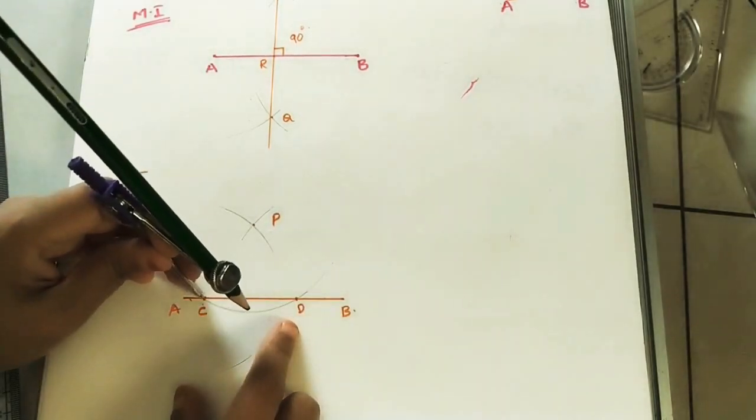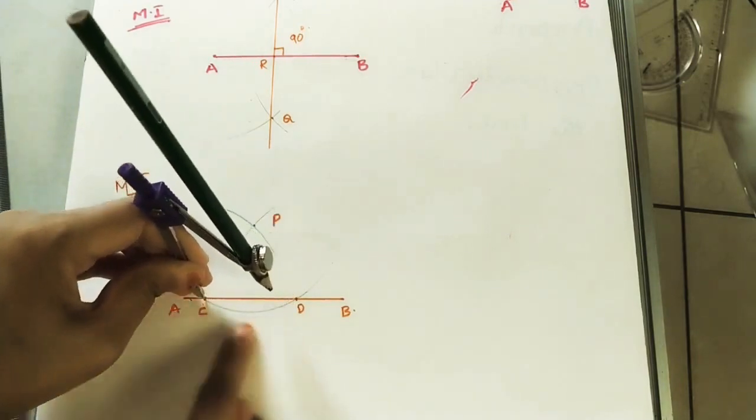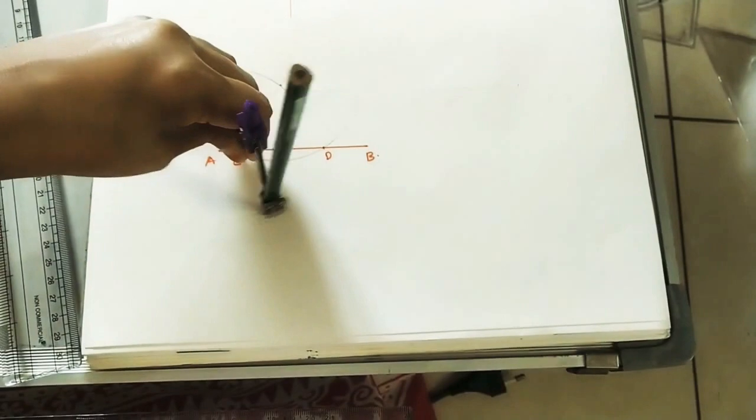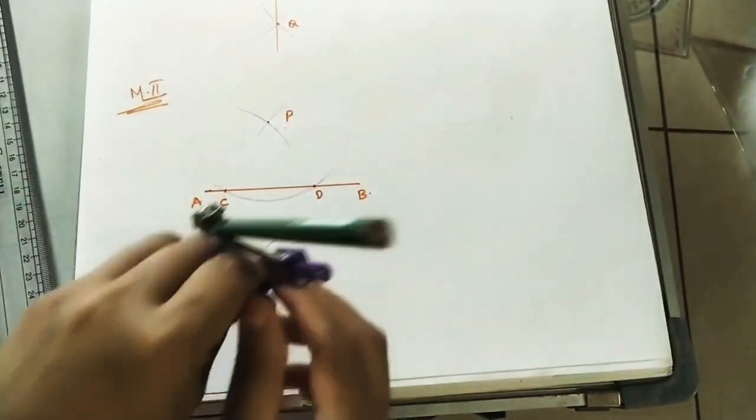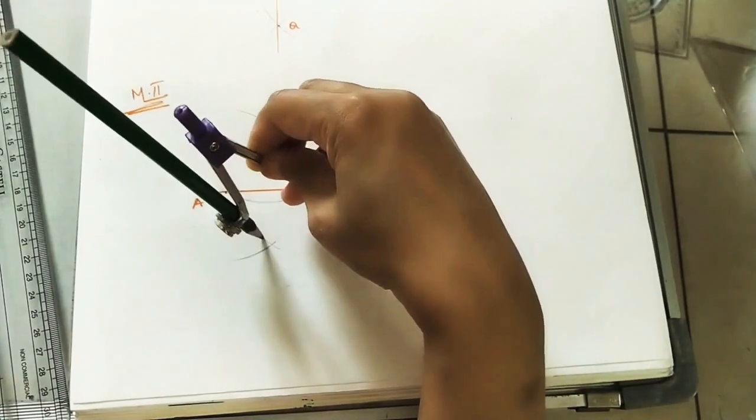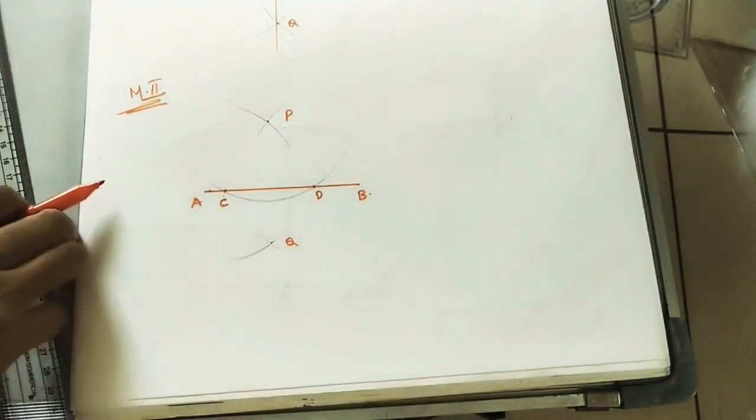For bisecting the arc means divide this arc into two parts. Take more than half of the radius of CD length. This is the CD length. More than half. Just do an arc from C. You will get one arc. Take the same radius. D as center. Cut this arc. Whatever intersection point is coming, Q point. Let us take. Join P and Q.